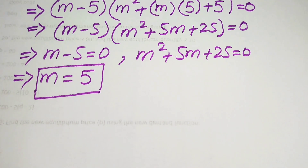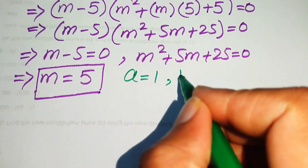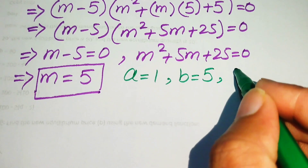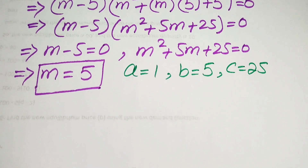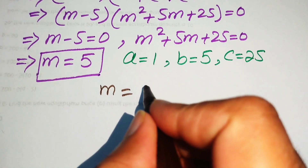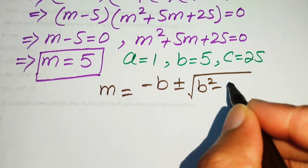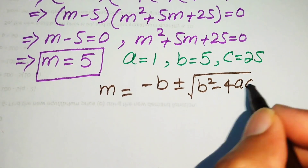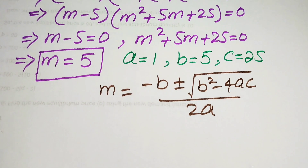To find the other two roots we solve the quadratic equation m squared plus 5m plus 25 equals 0 using the quadratic formula: m equals negative b plus or minus the square root of (b squared minus 4ac), all divided by 2a.